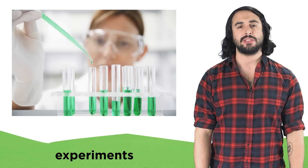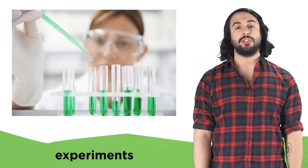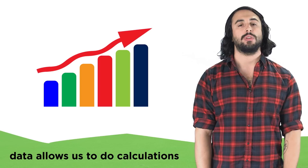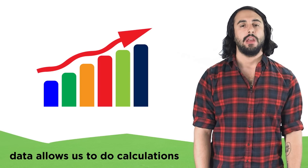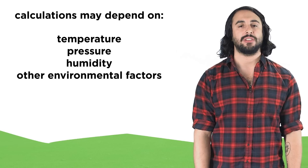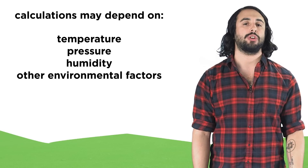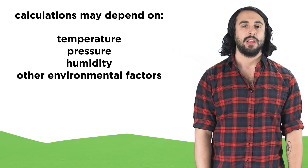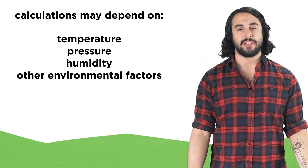In order to do science, we must do experiments, and when we do these experiments, the data we collect will allow us to do calculations. Any relevant calculations may depend on certain environmental factors, like temperature and pressure, and sometimes humidity, and these parameters can have a range of values.